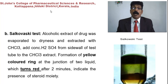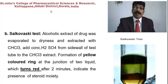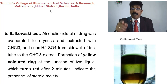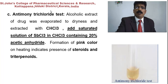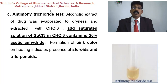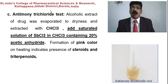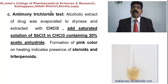Salkowski test: alcoholic extract evaporated to dryness, extracted with chloroform, and concentrated sulfuric acid (H₂SO₄) is added from the sides of the test tube. Formation of a yellow color ring at the junction of the two liquids, which turns red after about two minutes, indicates presence of a sugar moiety. Antimony trichloride test: extract evaporated and extracted with chloroform; a saturated solution of antimony trichloride in chloroform containing 20% acetic anhydride is added. Formation of pink color on heating indicates presence of steroids and triterpenes.